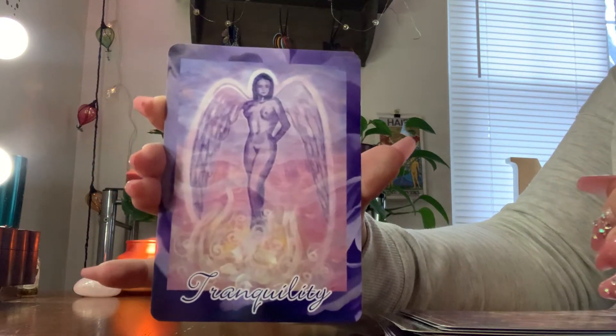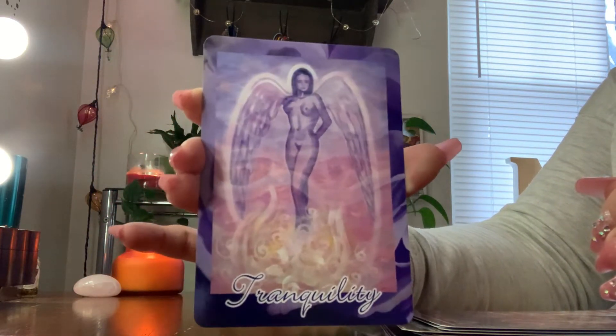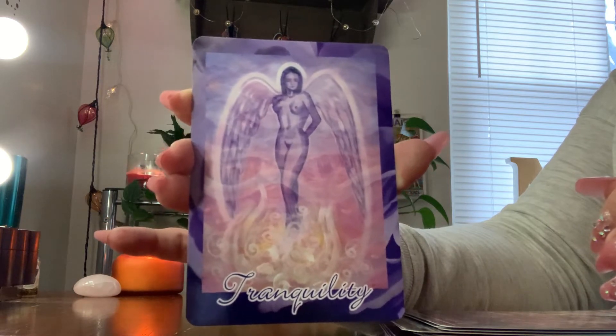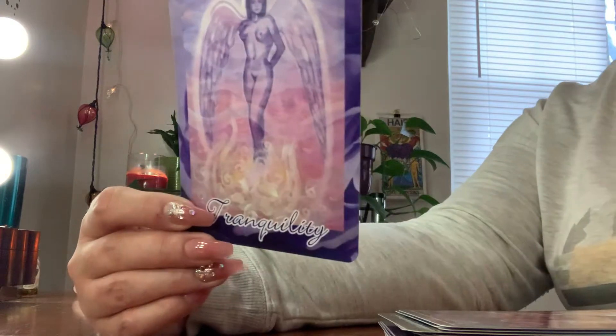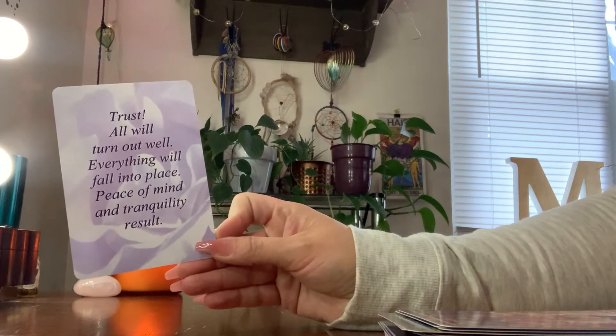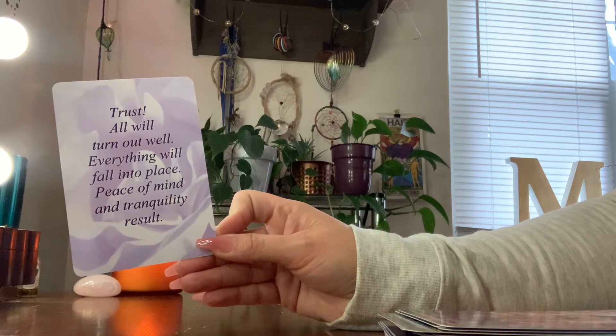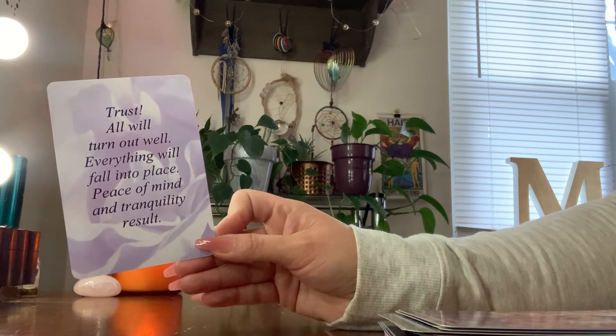If that's not a Pisces card, I don't know what else is. Also, we just came out of the full moon in Pisces. Let me read. It says, trust. All will turn out well. Everything will fall into place. Peace of mind and tranquility result.